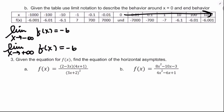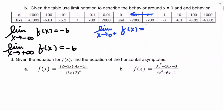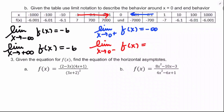We also use limit notation to describe the behavior around x equals 0. As x approaches 0 from the positive side — where numbers are actually positive — the limit of f of x goes to negative infinity: negative 7, negative 700, negative 7,000. And as x approaches 0 from the negative side, f of x gets larger and larger: 7, 700, 7,000 — that's going to positive infinity.